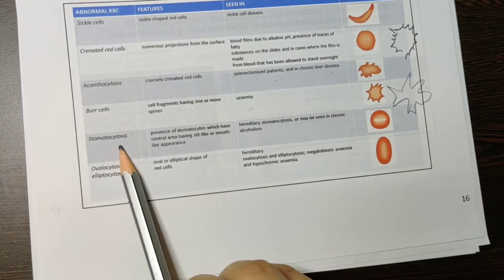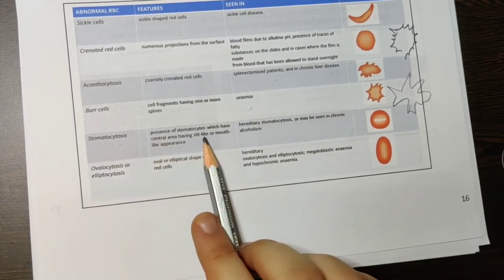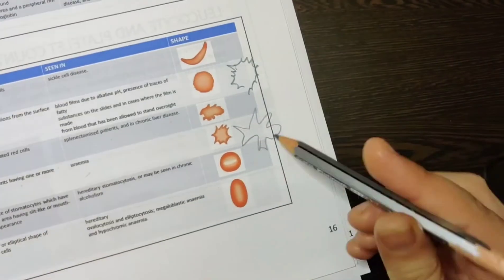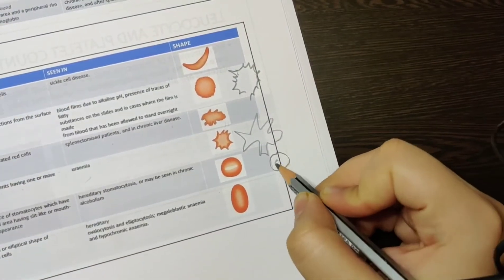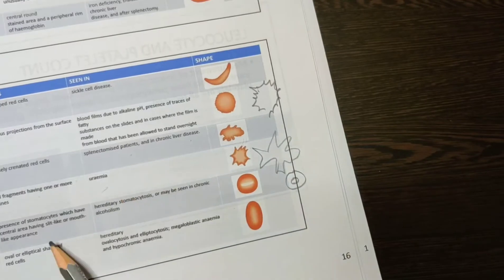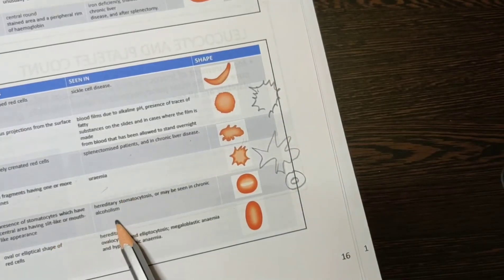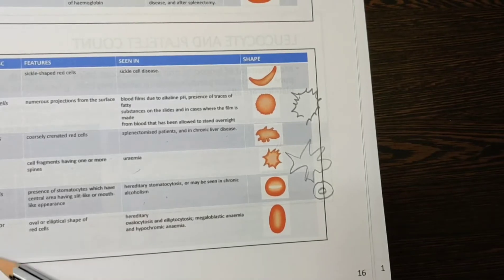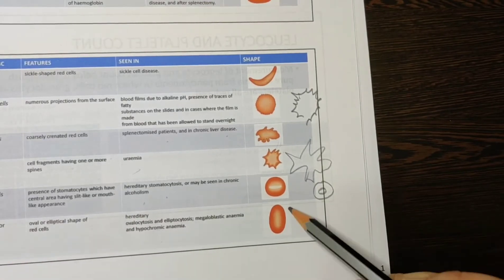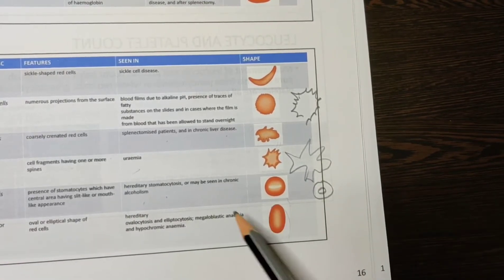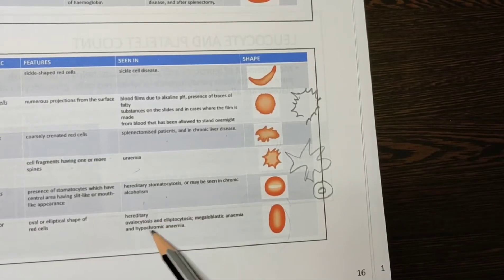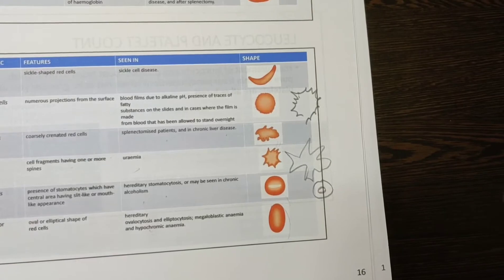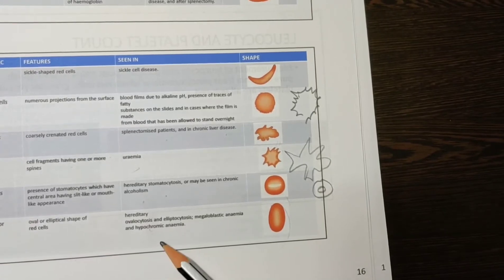Stomatocytosis means the presence of stomatocytes. What are stomatocytes? They look like a mouth — you have an opening. This mouth-like appearance is seen in alcoholism and in hereditary stomatocytosis. Ovalocytosis means oval-shaped cells. These are seen in hereditary ovalocytosis — just add hereditary in front of ovalocytosis. It is also seen in megaloblastic anemia and hypochromic anemia.